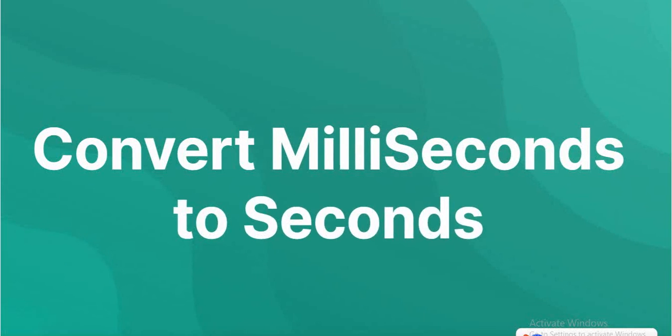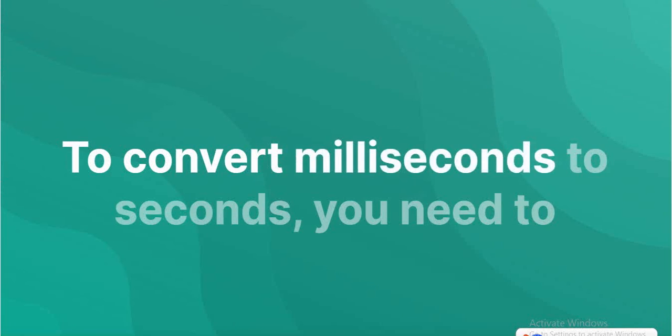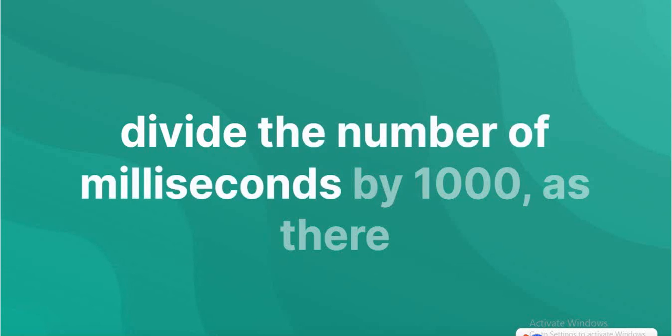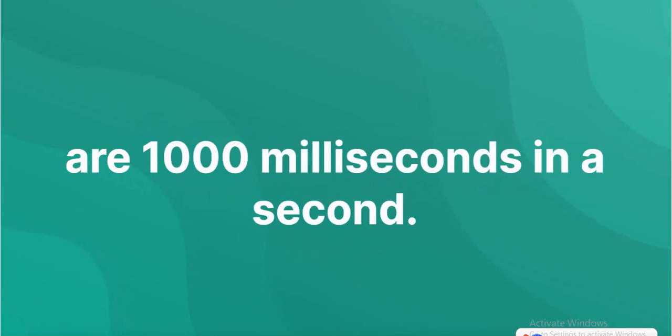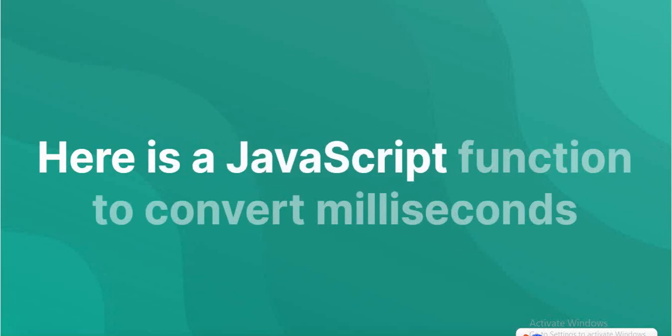Milliseconds to seconds: to convert milliseconds to seconds, you need to divide the number of milliseconds by 1,000, as there are 1,000 milliseconds in a second. Here is a JavaScript function to convert milliseconds to seconds.